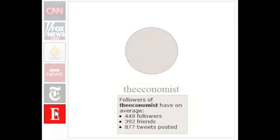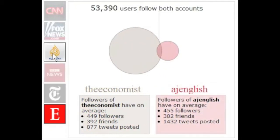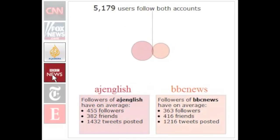Last but not least, we found an engagement study published by SocialFlow, showing how different audiences retweeted messages from news organizations. This is the overview of the broadcasters you can compare. Let's look at The Economist — the visualization shows the average number of followers, friends, and the amount of tweets they've posted. Now comparing with Al Jazeera English: the size of the circle indicates the number of followers. The Economist has a lot more followers than Al Jazeera English. The overlapping part indicates the amount of followers that follow both accounts. You can compare any of these broadcasters.